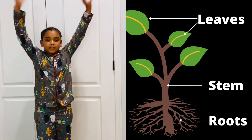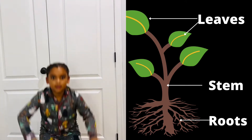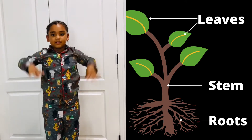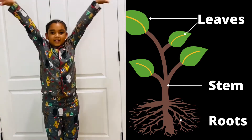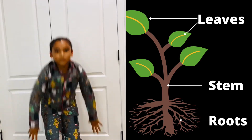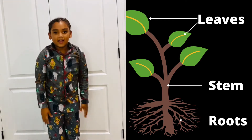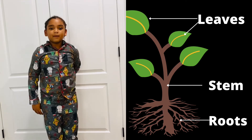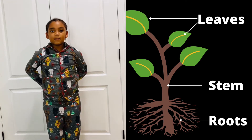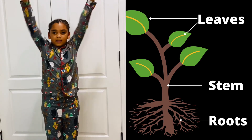Leaves, stem, roots. Leaves, stem, roots. Leaves, stem, roots. What are some parts of a plant?